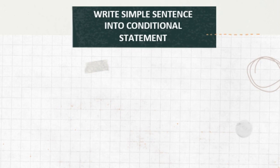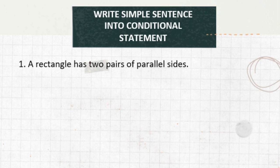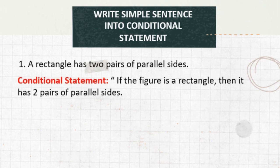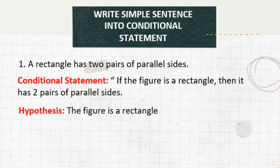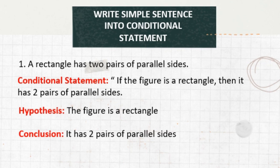Let's take an example on how to write a sample sentence as a conditional statement. First: a rectangle has two pairs of parallel sides. The conditional statement: if the figure is a rectangle, then it has two pairs of parallel sides. The hypothesis is the if-part: the figure is a rectangle. The conclusion is the then-part: it has two pairs of parallel sides. Always remember that the conclusion is the result of a hypothesis.